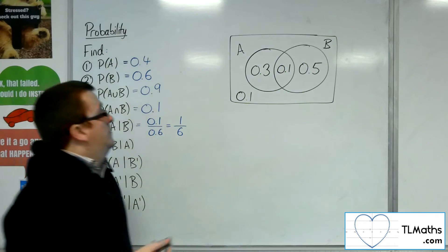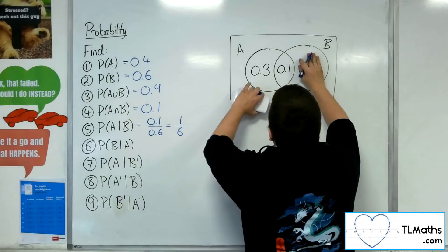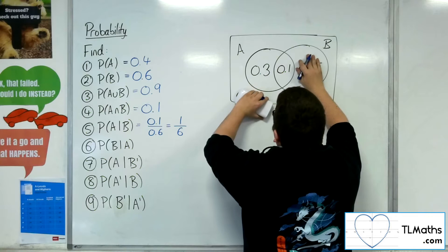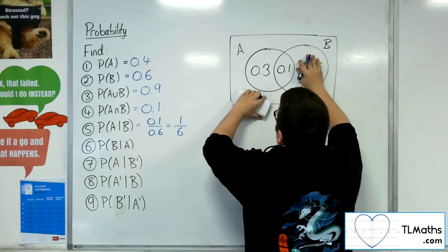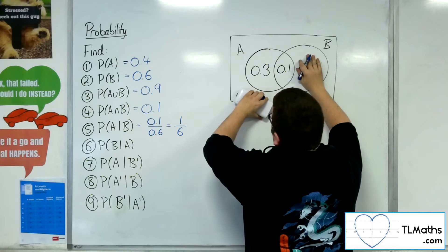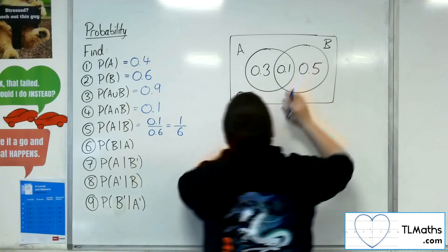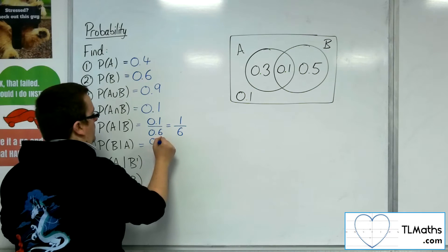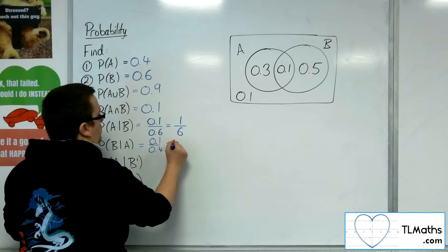Now the probability of B given A, so given A, we erase everything that's not A, and then what's the probability of B? Well, it's the 0.1 out of the total that you see, 0.4. So 0.1 out of 0.4 is a quarter.